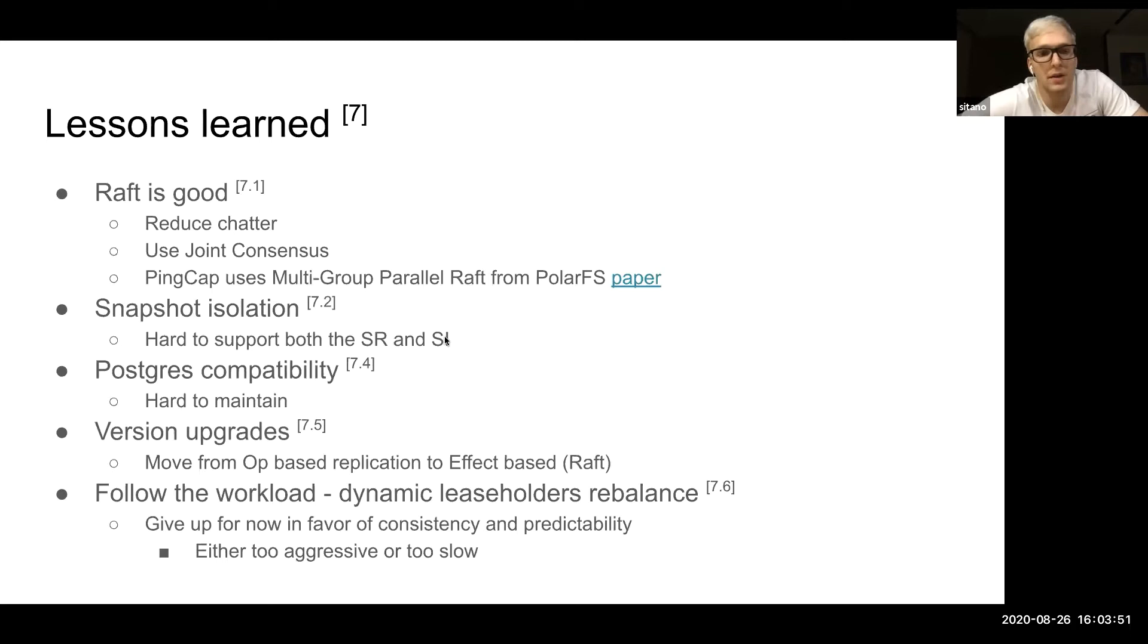They describe why they removed the snapshot isolation by telling that specifically implementing snapshot isolation based on their optimistic consequential algorithm would require mutual exclusion, which doesn't make sense. Then the Postgres compatibility drivers is a problem, and they are thinking of making their own drivers. The version upgrades is a hard thing. So they moved from the operation-based replication to the effects-based replication. Effects are Raft comments in the Raft.